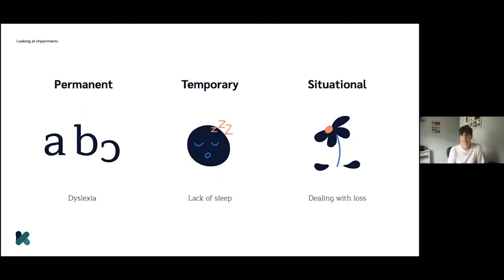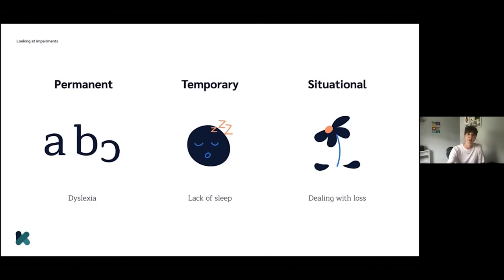As mentioned earlier, 70% of impairments are invisible. Quite often when people talk about accessibility, they talk about impairments that we can see. In the context of digital platforms, each of these circumstances — dyslexia, lack of sleep, dealing with loss — can impact someone's experience and journey in different ways. These invisible impairments are something we spend a lot of time trying to understand at Kooth. Because of the nature of our service, people are coming to us in a variety of different mental states — they may be in distress, at the point of a panic attack, or living with depression. So we need to consider how the experience supports or hinders their individual journey.